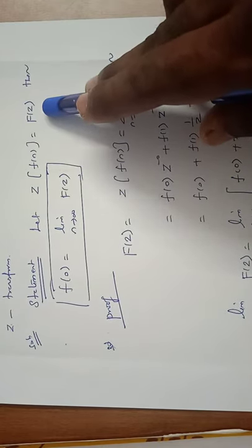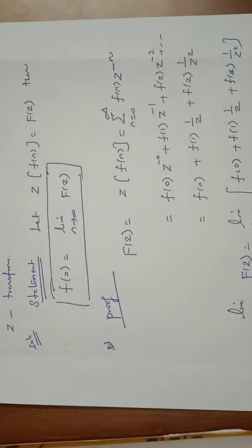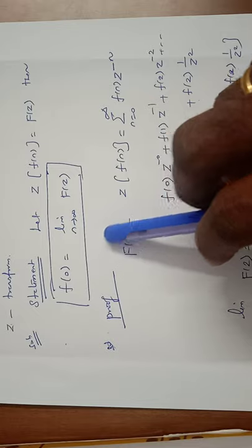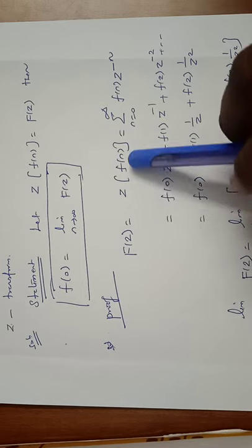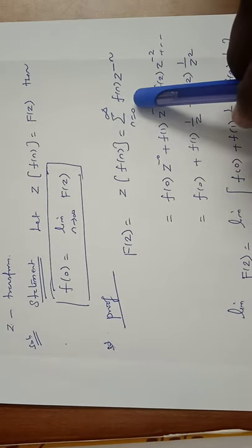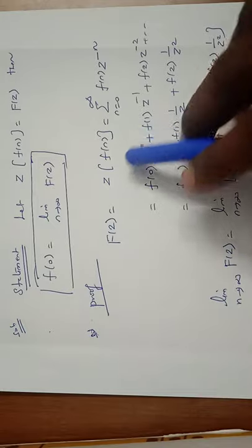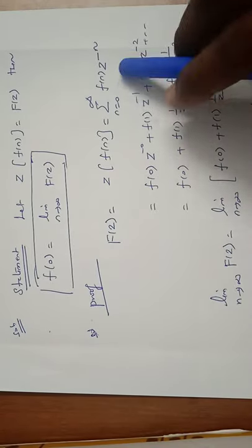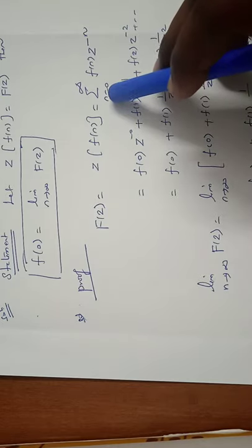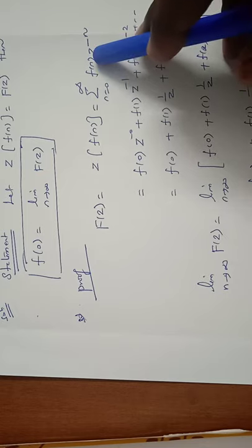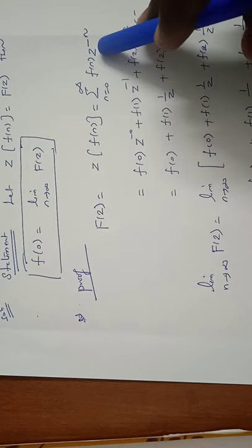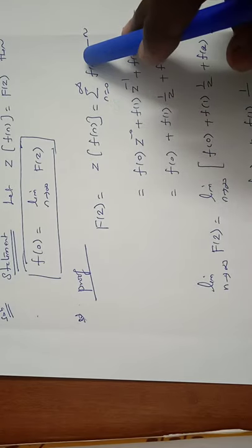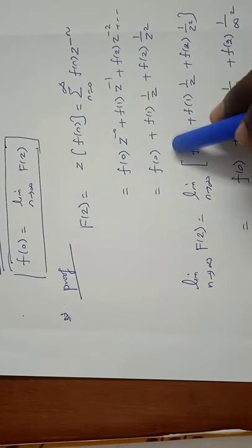To prove this, we start from the definition: F(z) = Z{f(n)} = sigma from n=0 to infinity of f(n) into z to the power minus n. Expanding this, putting n=0 gives f(0) z to the power 0; n=1 gives f(1) z to the power minus 1; n=2 gives f(2) z to the power minus 2; and so on.